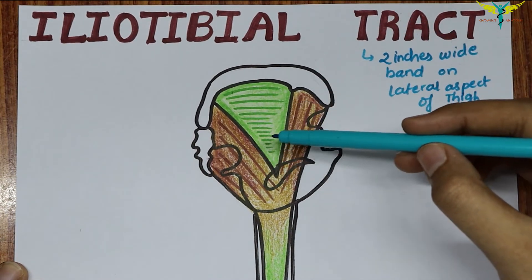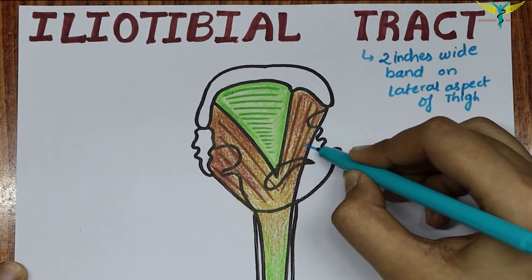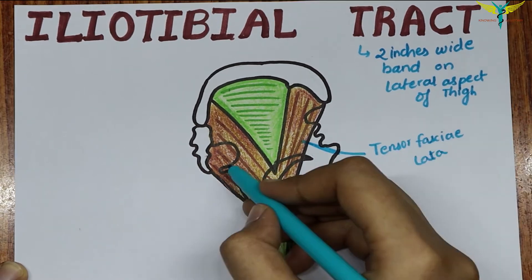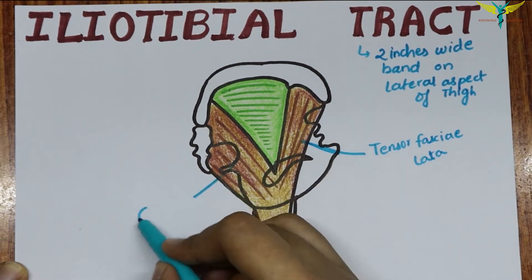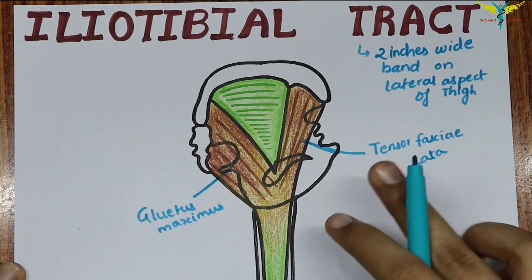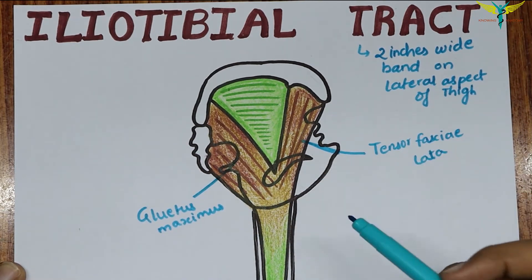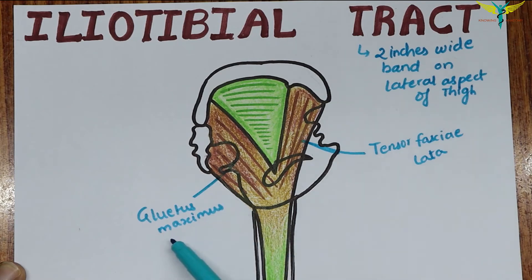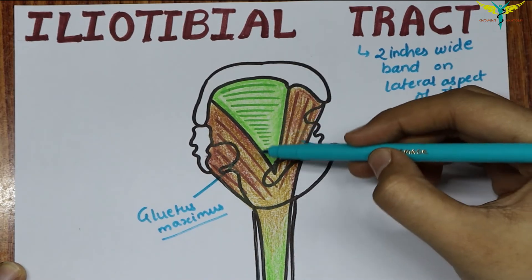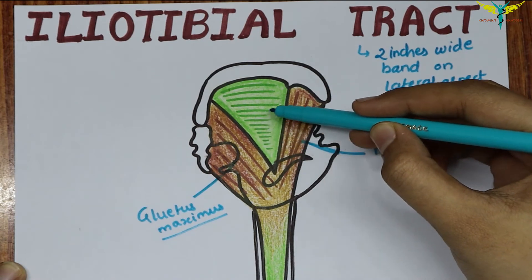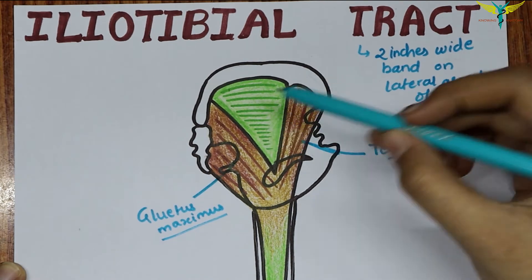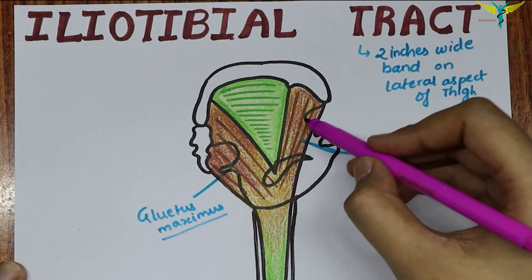The iliotibial tract splits into two layers and encloses two muscles: the tensor fascia latae and the gluteus maximus. It then forms a single thickened sheet called the gluteal aponeurosis between these two muscles.